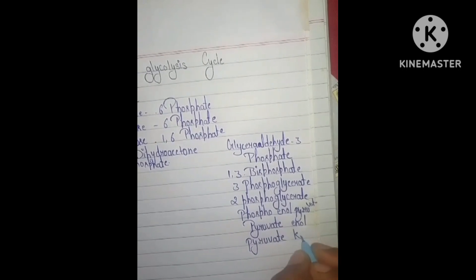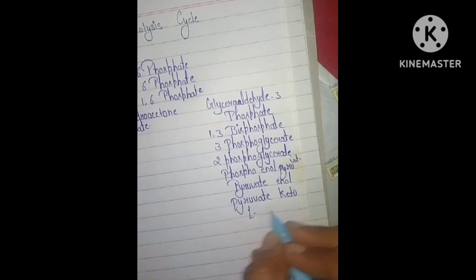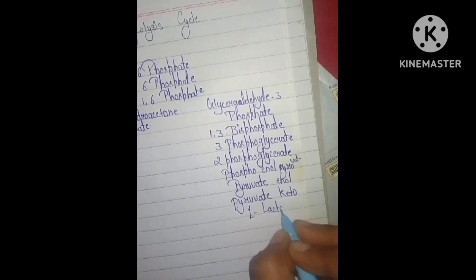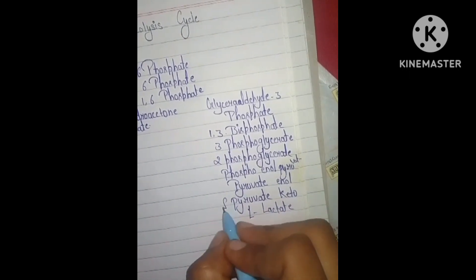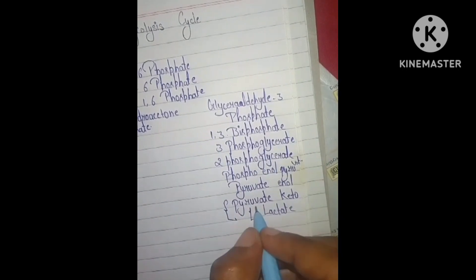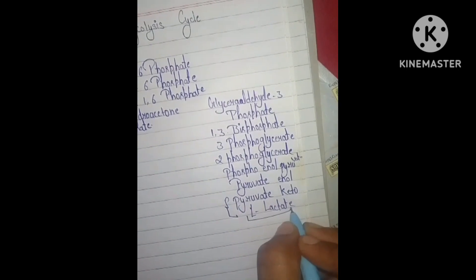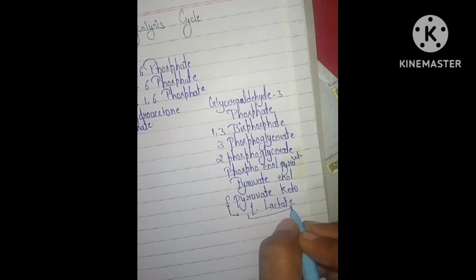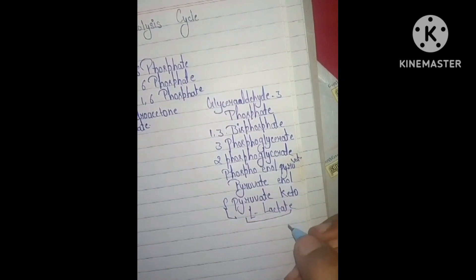Pyruvate exists in a keto form, and then is converted to L-lactate. These are two different forms — pyruvate under aerobic conditions and L-lactate under anaerobic conditions.